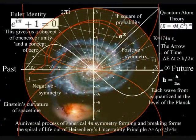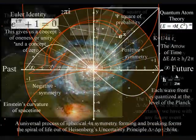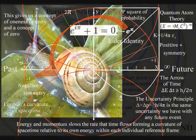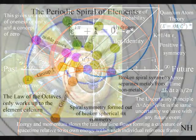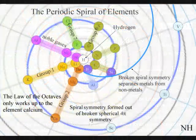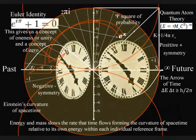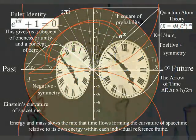This process is totally universal and interactive from the largest object to the smallest creature right down to the smallest element of the periodic table, with slow the rate that time flows, forming a curvature of space-time relative to its own energy or mass.